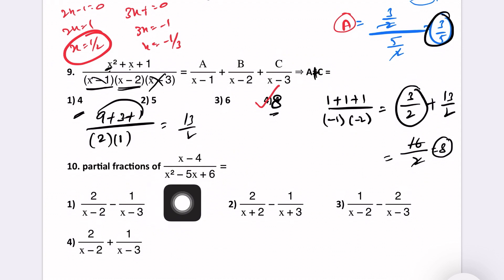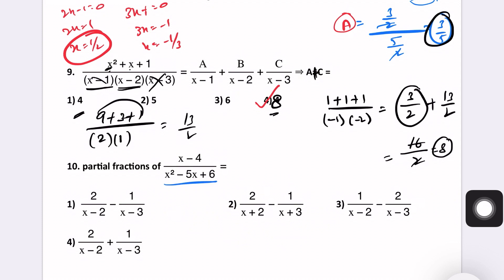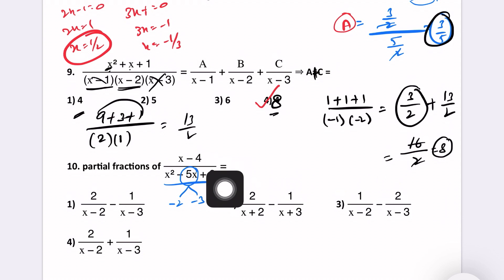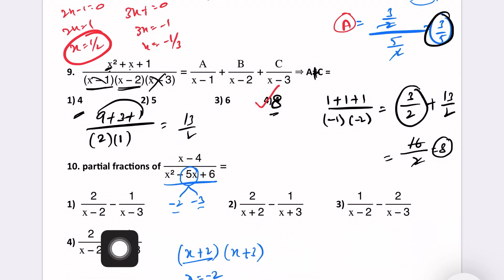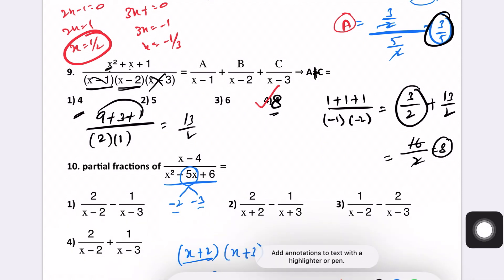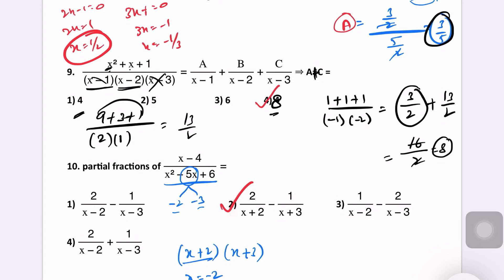Next question: Partial fraction of (x minus 4) by (x squared minus 5x plus 6). This denominator needs to be factored. Start with the middle number: minus 2 and minus 3 give minus 5, and minus 2 times minus 3 equals plus 6. So factors are (x minus 2)(x minus 3). Set x minus 2 equal to 0, x equals minus 2. There is a direct option as a second option.